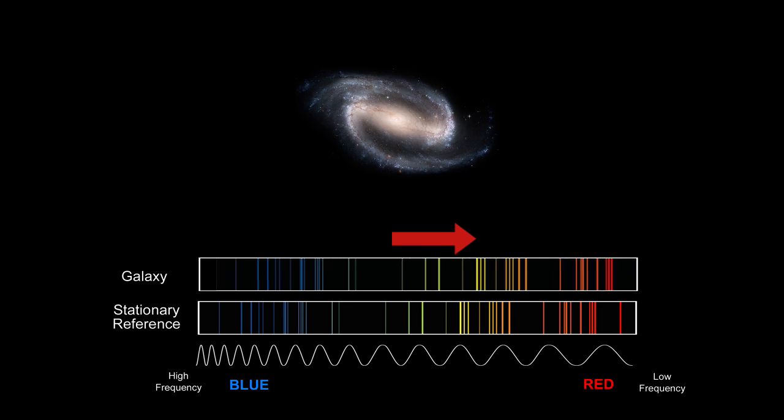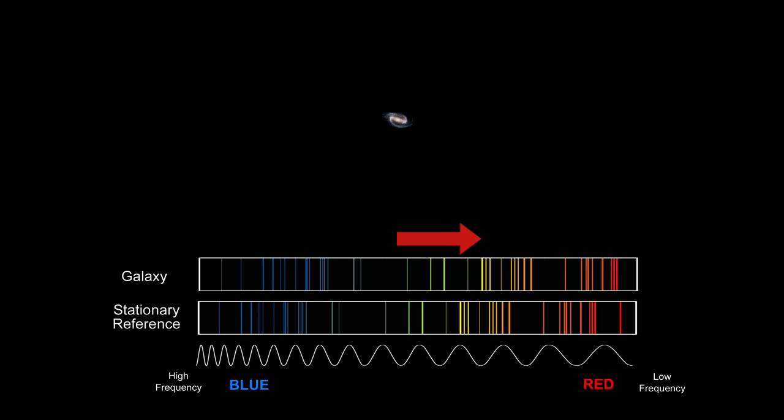Because lower frequency visible light is red, we call this a red shift. So we say the greater the red shift, the greater the velocity of the receding galaxy.